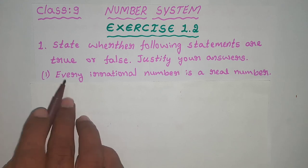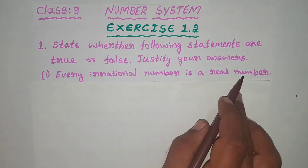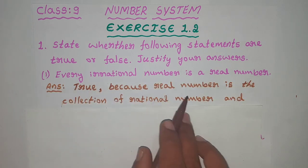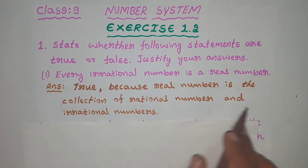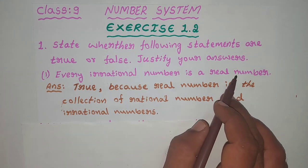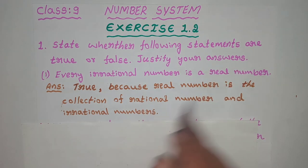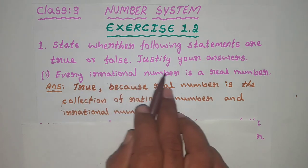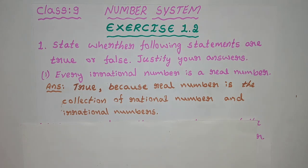First statement: every irrational number is a real number. This statement is true, because a real number is the collection of rational numbers and irrational numbers. So if you have rational numbers or irrational numbers, every irrational number is a real number. This statement is true.